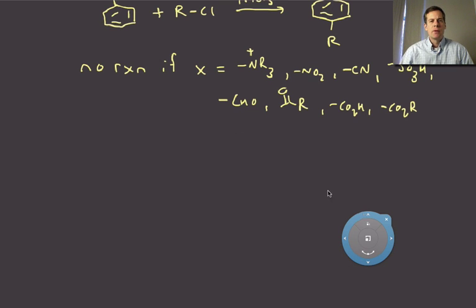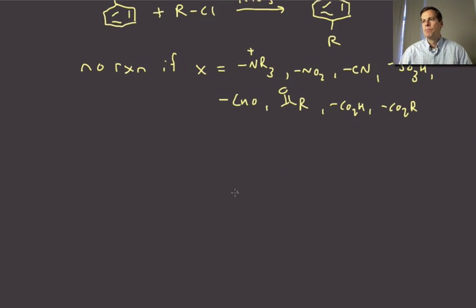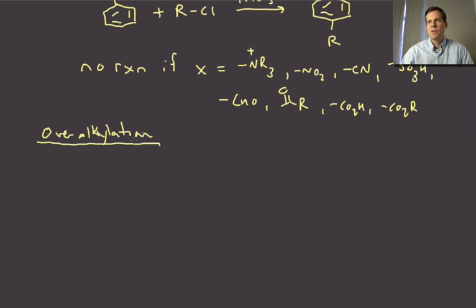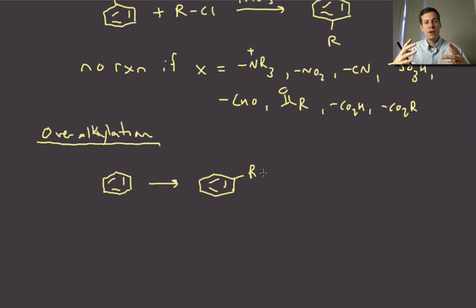All right we'll talk about a bit more about these electron withdrawing groups in a little bit. And then the last sort of problem is one to do with reactivity so we'll call this problem over-alkylation. All right so what happens here is and again we're going to get into this in more detail in just a second but after you do a Friedel-Crafts reaction so you convert your benzene into a benzene that is substituted with an alkyl group it turns out that an alkyl group actually increases the electron density of the aromatic ring.